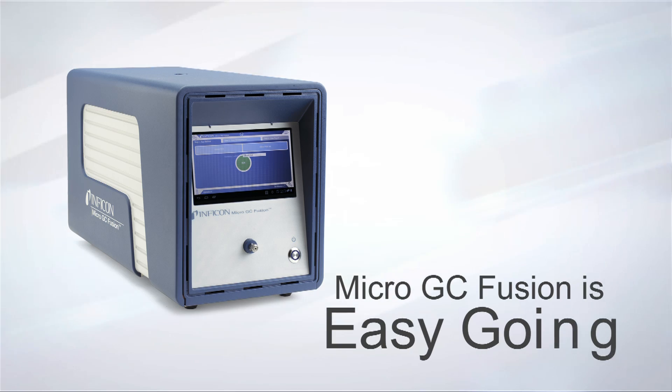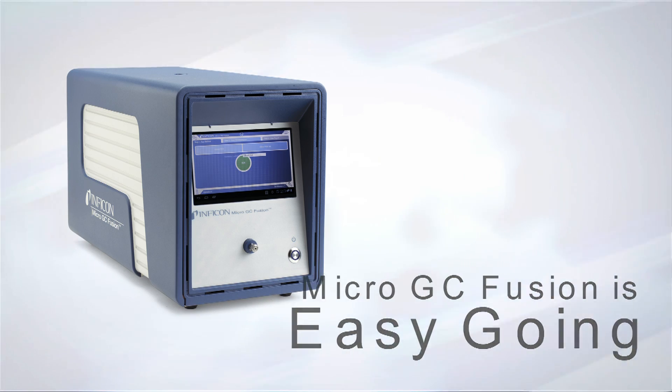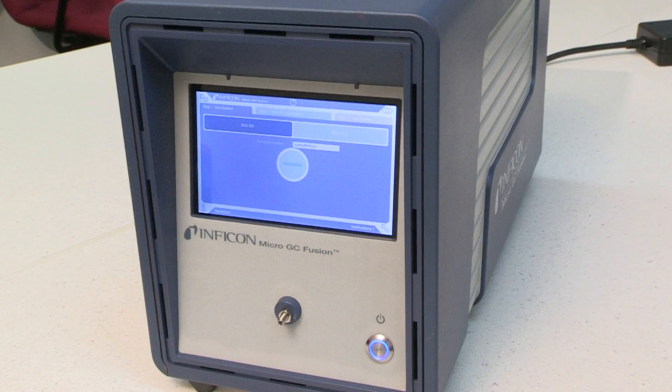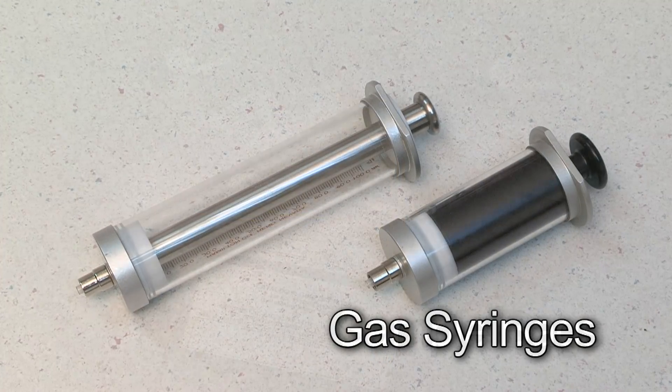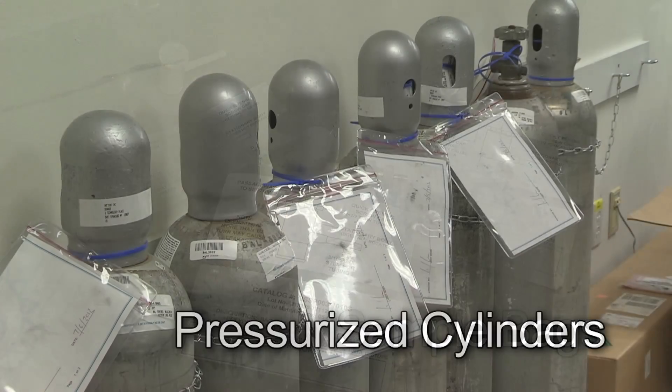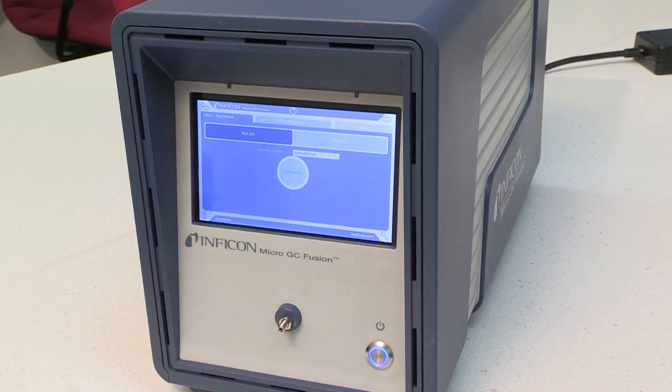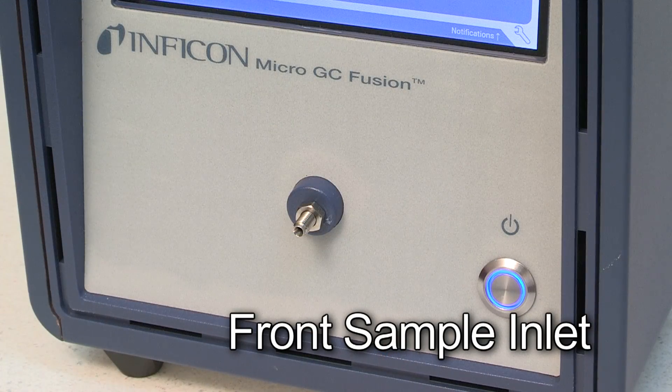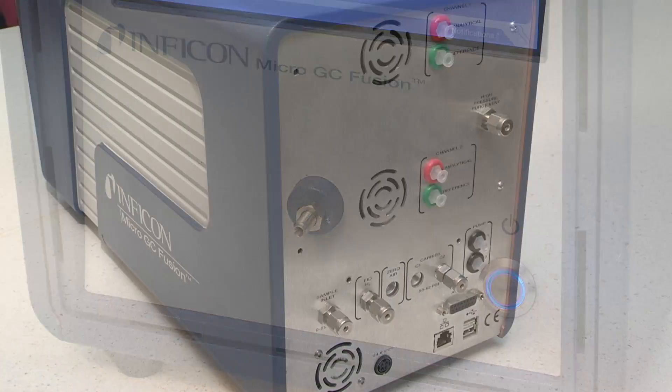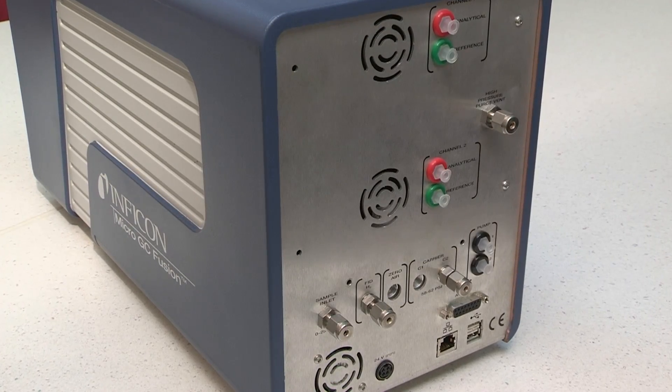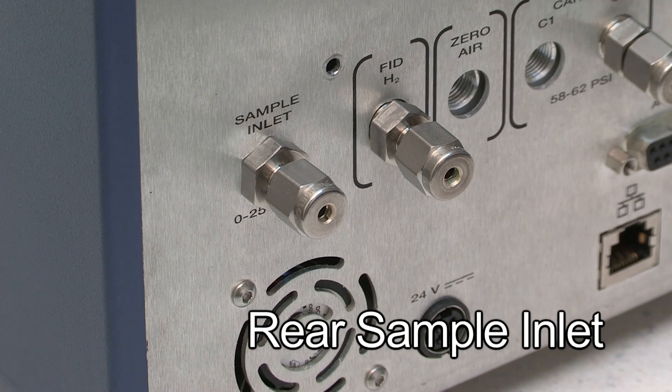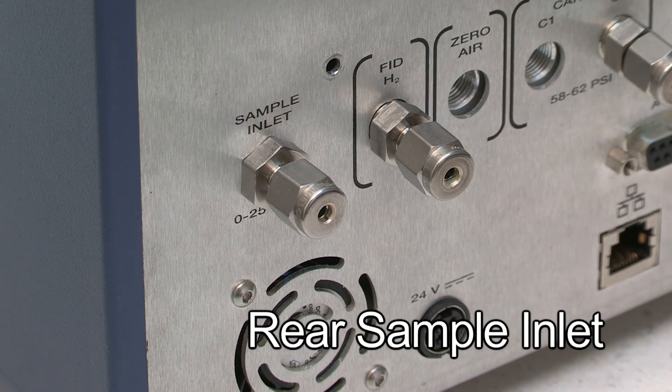Micro GC Fusion is easy going. Samples can be injected using a variety of introduction mechanisms, such as gas syringes, sample bags, pressurized cylinders and pipelines. The front sample inlet is heated and deactivated to assure measurement accuracy and repeatability. A sample gas may also enter the instrument from the rear inlet, providing front and back sample entry flexibility.